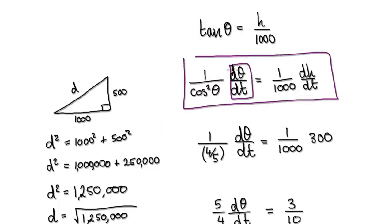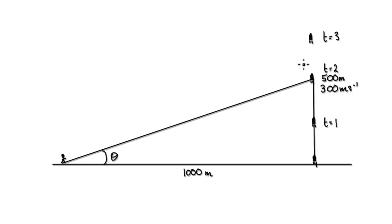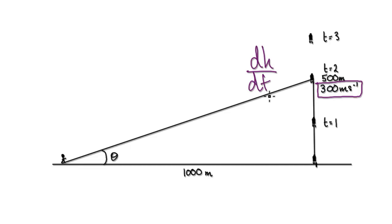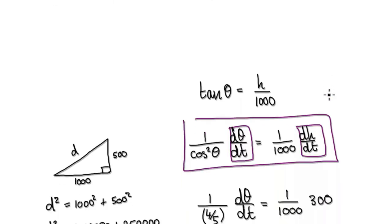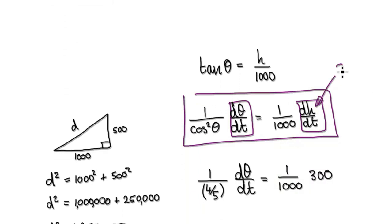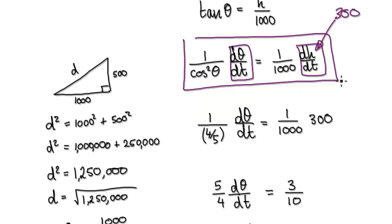We know dh by dt. dh by dt is the rocket traveling at a speed of 300, because h is the height and dh by dt is the movement in the height direction for a given period of time. So dh by dt is actually 300, because it's traveling vertically upwards at 300 meters per second. Going back to our equation, we know that dh/dt is 300, so we can substitute that in.